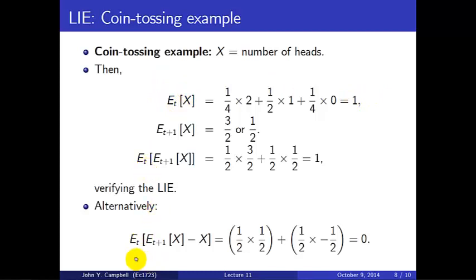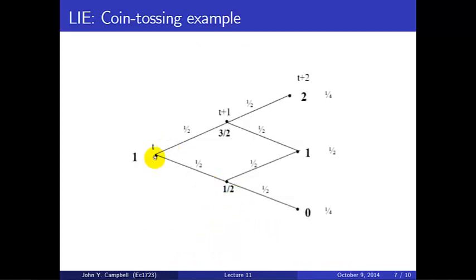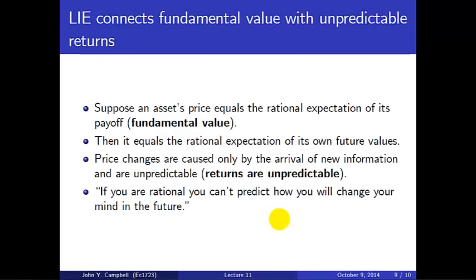Alternatively, we could try to compute the expectation of the mistake we're going to make, and with probability one-half the mistake will be positive a half, and with probability one-half the mistake will be negative a half, so the average of that is zero. If we look back at the figure, if we try to predict our future mistake, we're standing here, we're looking at our future mistakes, the mistake is either plus a half if we go up either of these nodes, or it's minus a half if we go down one of these nodes, and those are going to cancel out their equal probability, so the expected mistake is zero.